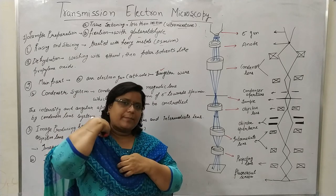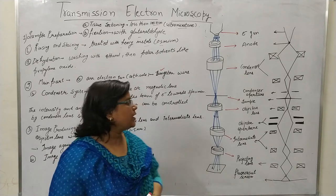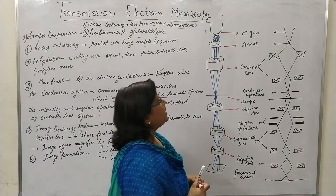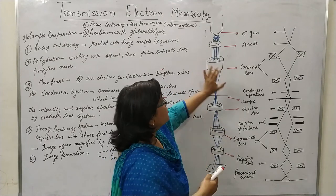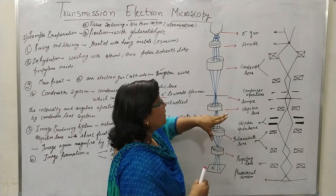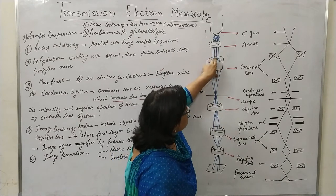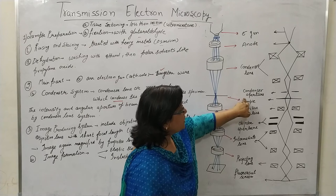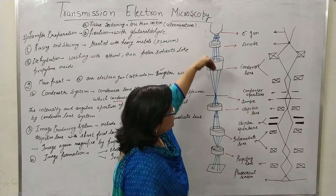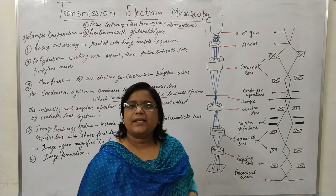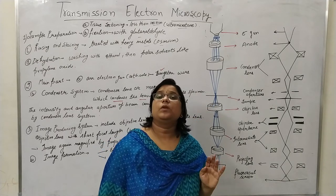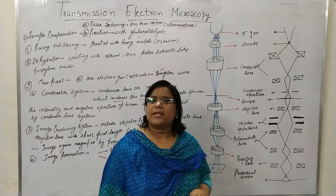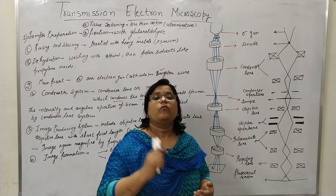The second part is the condenser system — the condenser lenses, which are basically magnetic lenses. These condense the electron beam coming from the anode and give it a proper direction. The condenser lens also has a condenser aperture. Then the beam falls on the sample. In SEM the specimen is kept at the end/stage, but in TEM the sample is kept in the middle.